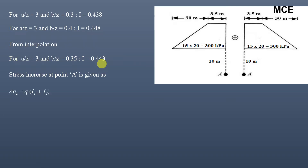The vertical stress increase at point A is: Δσ = q × (I₁ + I₂) = 300 × (0.443 + 0.443) = 300 × 2 × 0.443 = 265.8 kPa. This is the vertical stress increase at point A due to the embankment loading.